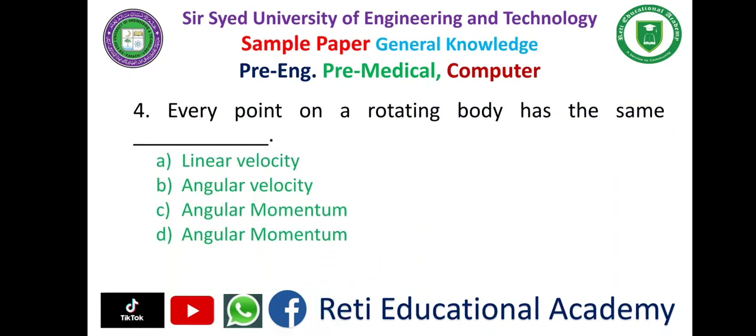Question number 4. Every point on a rotating body has the same: A. Linear velocity, B. Angular velocity, C. Angular momentum, D. Angular momentum. And the correct answer is B. Angular velocity.